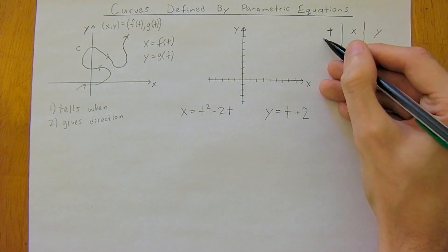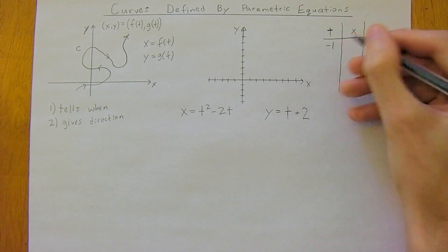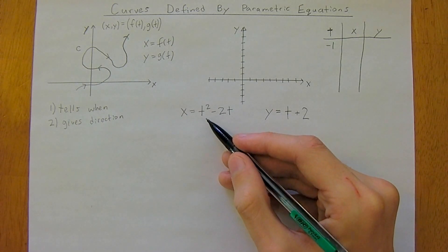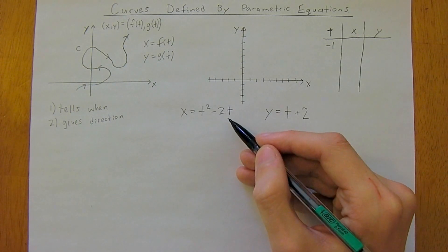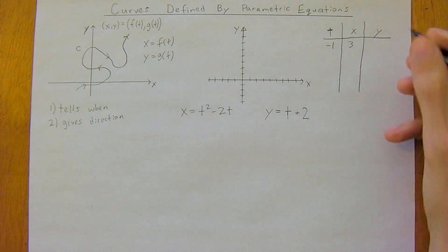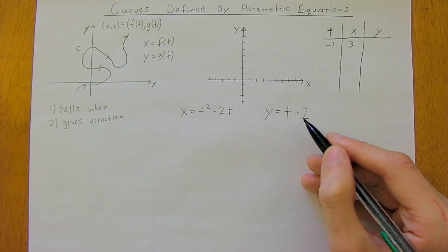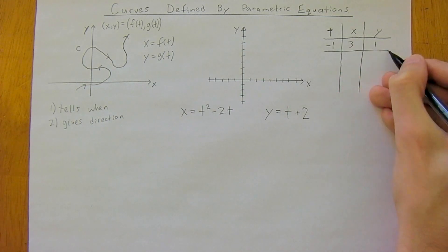We'll start plugging in values for t and see what comes out for x and y. So t equals negative 1. We have negative 1 squared, which is 1, minus 2 times negative 1, so 1 plus 2. The x coordinate will be 3. And negative 1 plus 2, so the y coordinate will be 1. That is our first point.